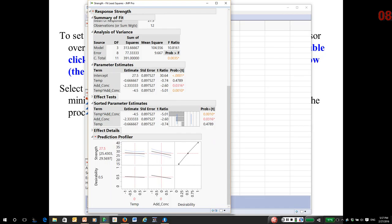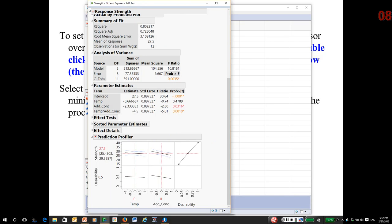So I click on the profiler menu. I select desirability functions. By default, when you first do this, let's give a little more screen room here. When you first do this,